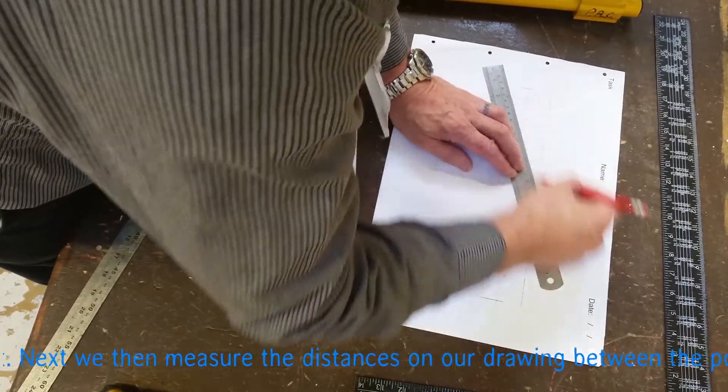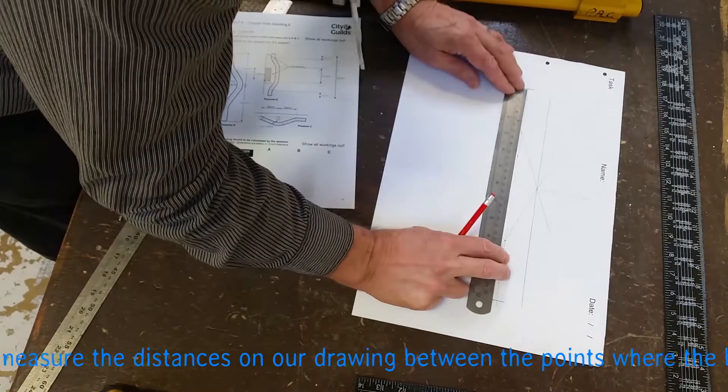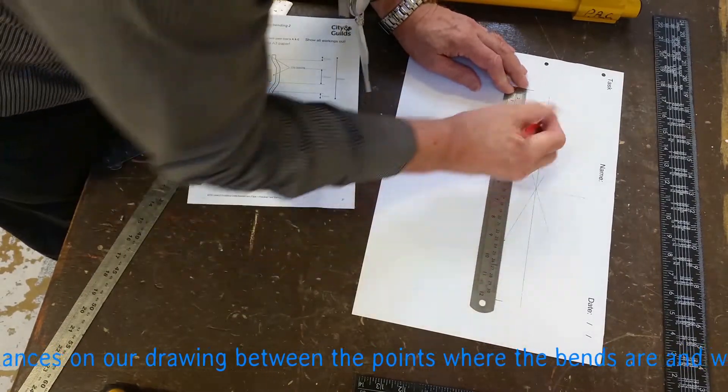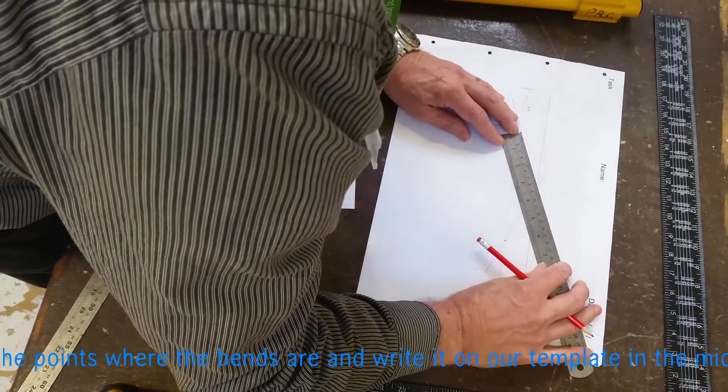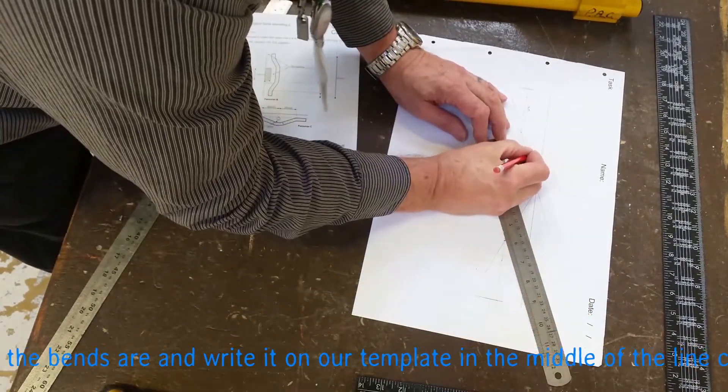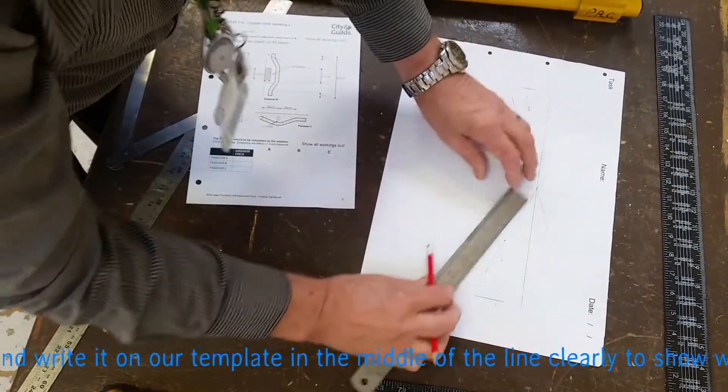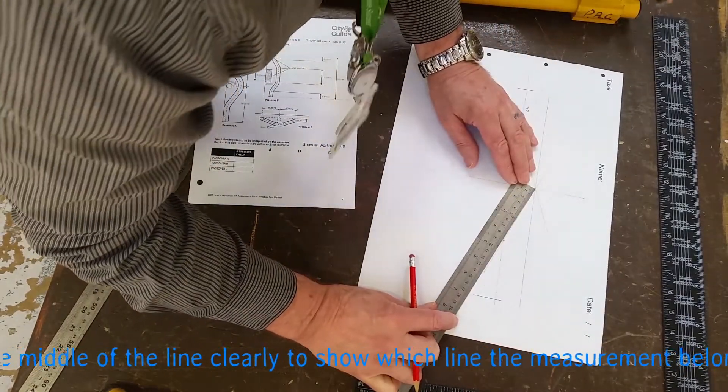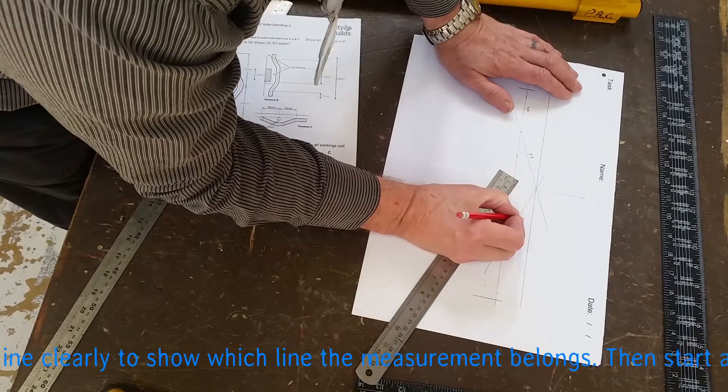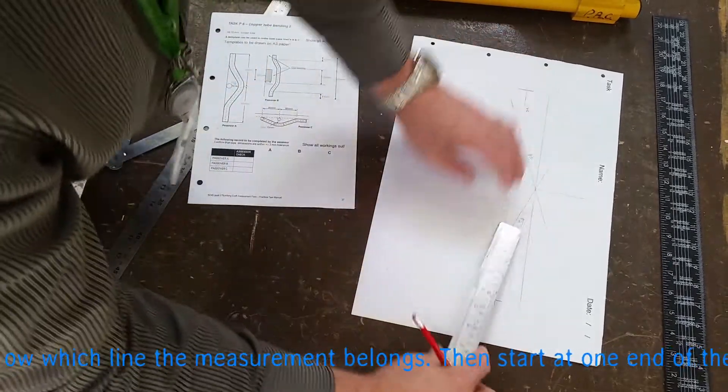Make sure it crosses exactly where you want it to be. Now we can measure from the end to the first bend, from the first bend to the second bend, write the number on there, the measurement, and these two should be the same if your drawing is accurate, obviously because it's the same angle. Then from the third bend to the end of the pipe on the right-hand side.